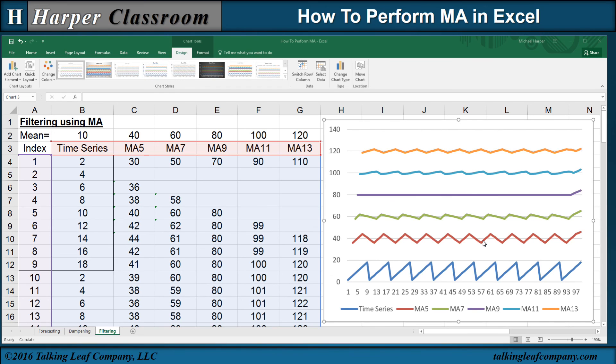This graph also illustrates dampening. Notice 5 and 7 dampen the time series. 11 and 13 dampen the time series. But 11 and 13 dampens it greater than 5 and 7 because the windows are greater.